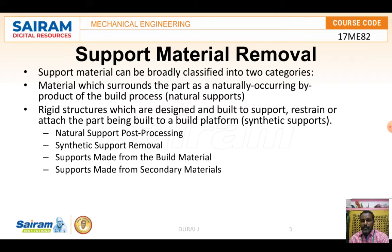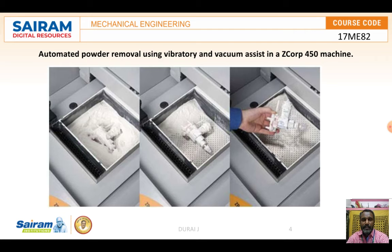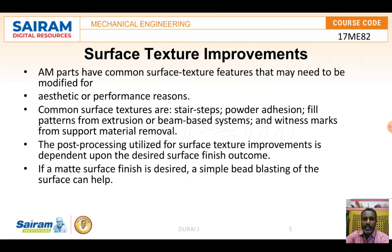Natural or synthetic supports are removed during post-processing. Supports can be made from the build material or from a secondary material. Here, one component is shown where powder is coated over it and then removed from the build platform. Automated powder removal is demonstrated using vibratory equipment — the webcam-assisted JetCarp 450 machine.